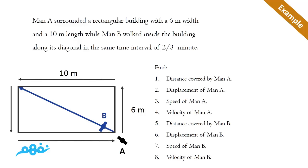A surrounded a rectangular building with a 6 meter width and a 10 meter length, while Man B walked inside the building along the diagonal in the same time interval of two